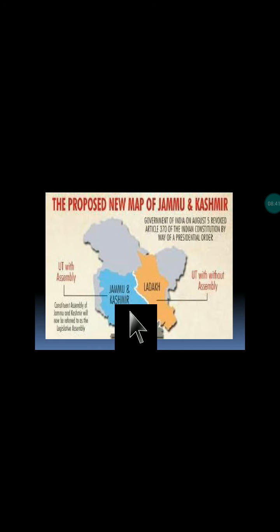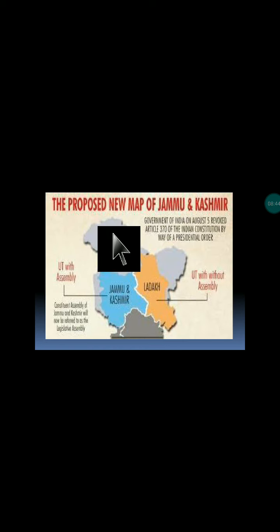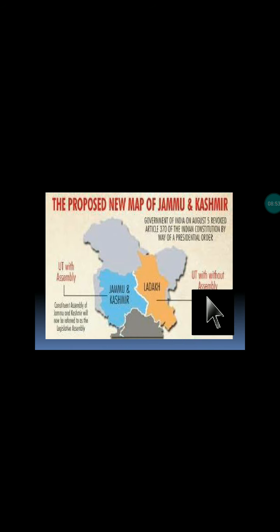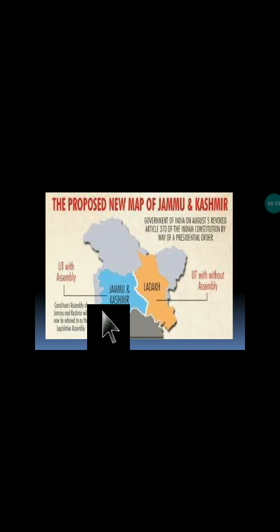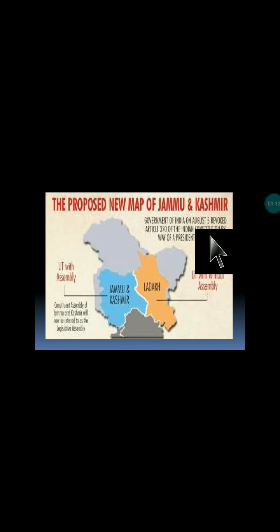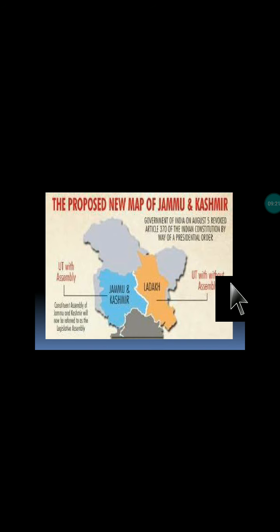The recently joined union territories — Jammu & Kashmir and Ladakh — are shown in the proposed new map. Jammu & Kashmir is a union territory with a legislative assembly, while Ladakh is a union territory without an assembly. Jammu & Kashmir previously had a separate constituent assembly, now renamed as the legislative assembly. On August 5, 2019, the Government of India removed Article 370 by presidential order, placing it fully under union government control.